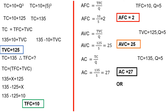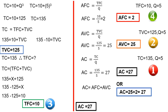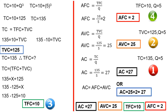Then, AFC is equal to AC minus AVC. AC value is 27, AVC value is 25. So AFC equals 27 minus 25, which is 2. Therefore, the final answers are: AC equals 27, AVC equals 25, TFC equals 10, and AFC equals 2.